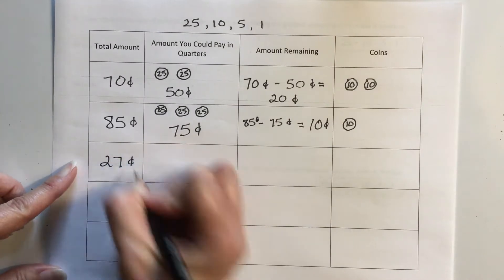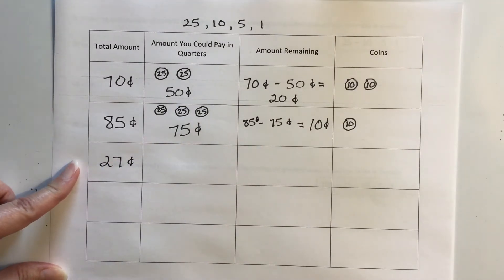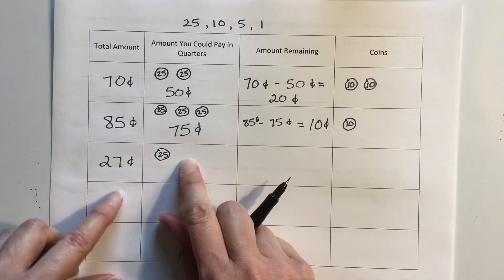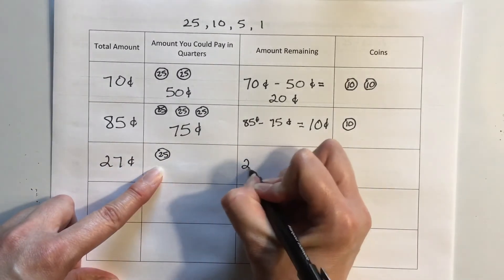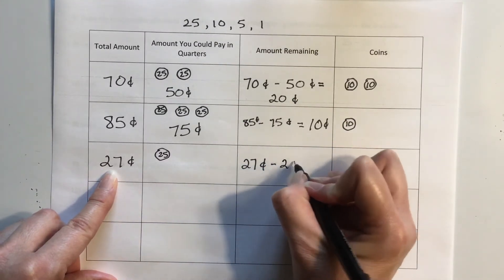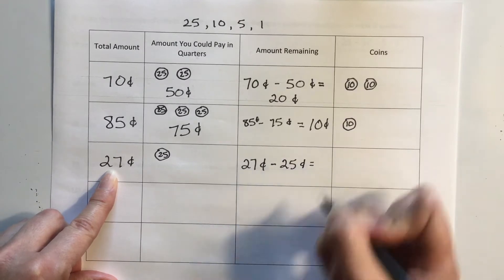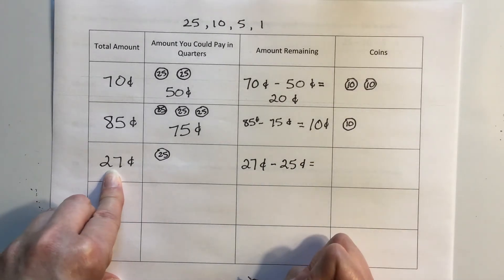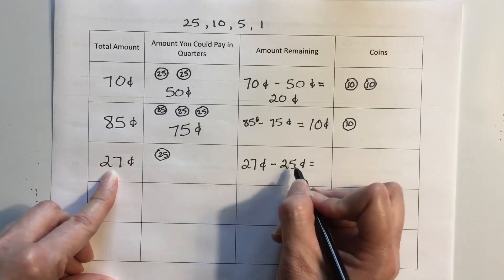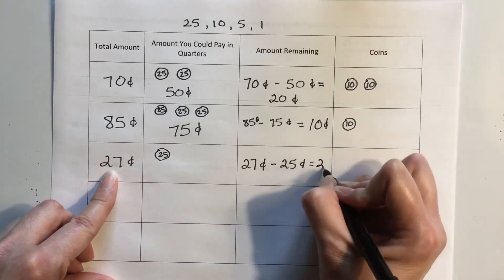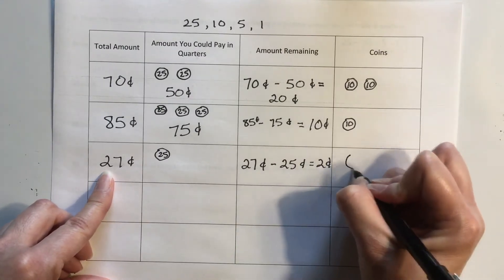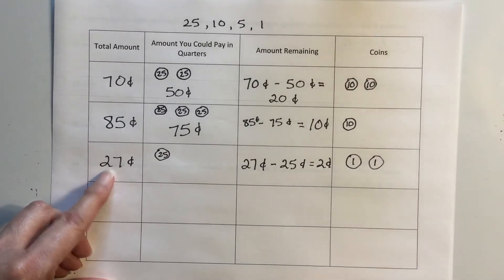What if I want to make 27 cents? How many quarters can I use? I can definitely use one, but if I add another, I'll be too high — so just one. 27 take away 25 cents. I can put 25 in my head and count up: 26, 27 — that's 2 cents. To make 2 cents, I use two pennies.